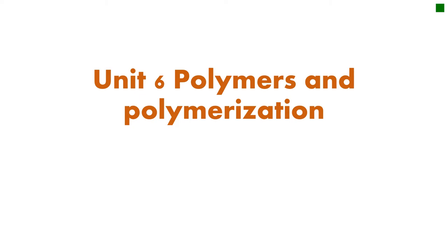Today's session, we are talking about unit number 6 in a senior 6 class that is entitled Polymers and Polymerization. This unit is a continuation of organic chemistry that was studied in senior 5, and a part of it was studied in senior 6, unit number 4 and 5.